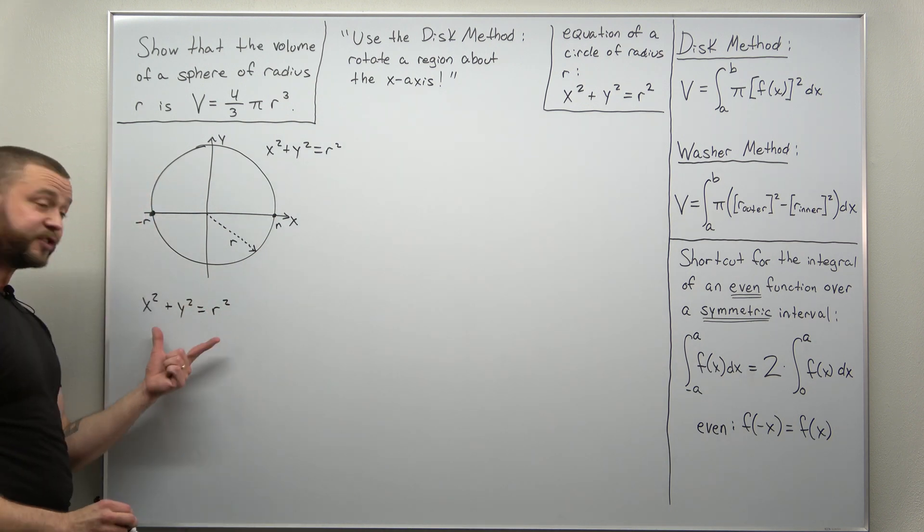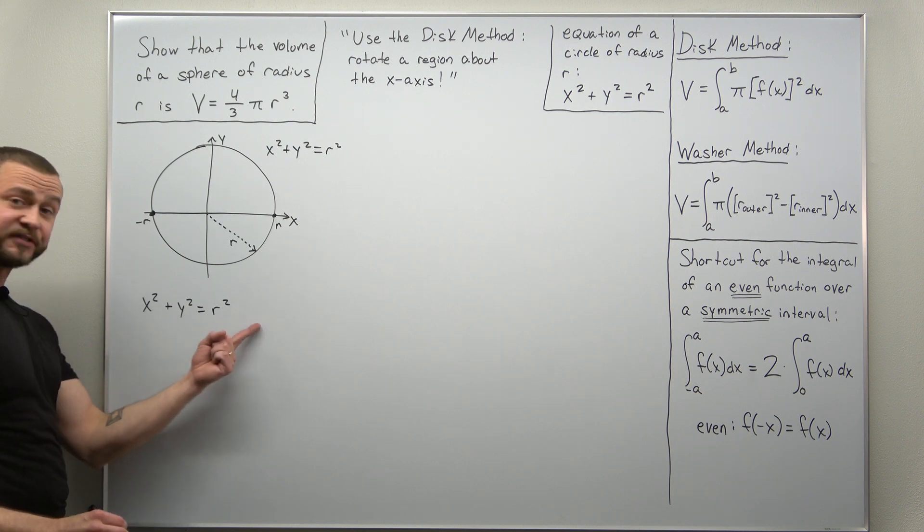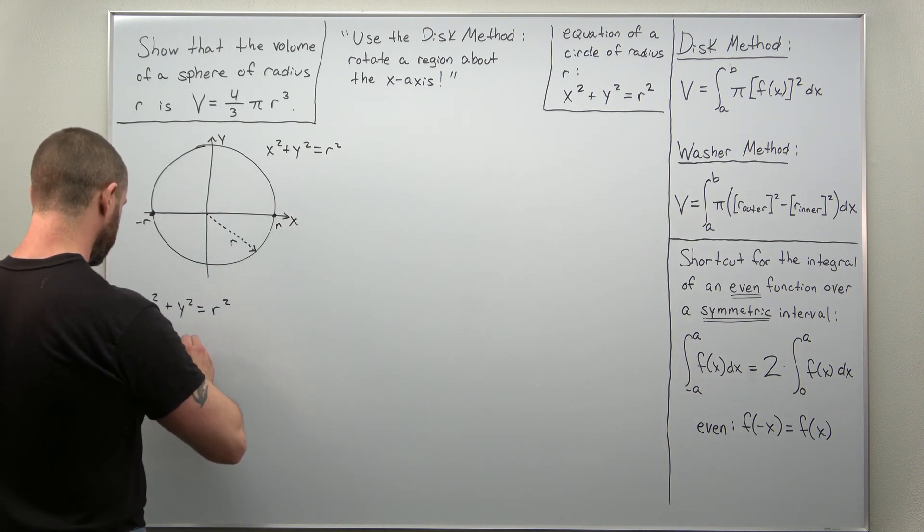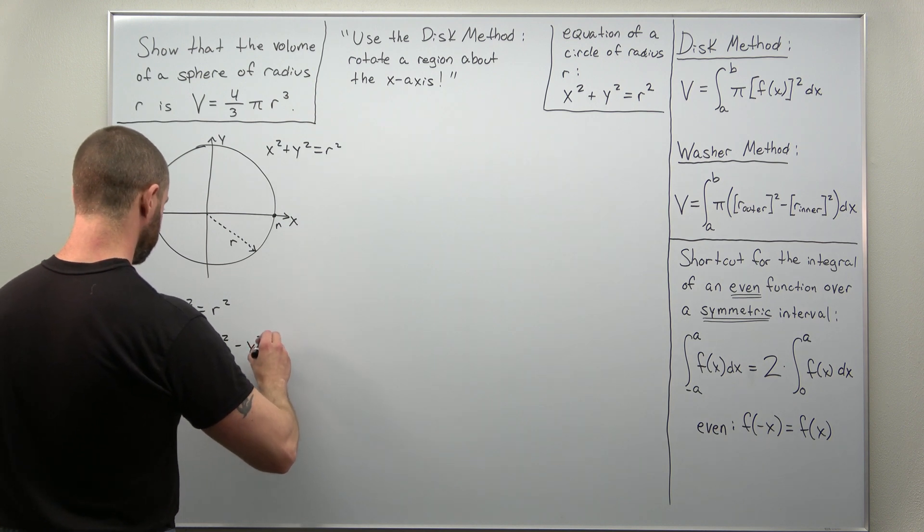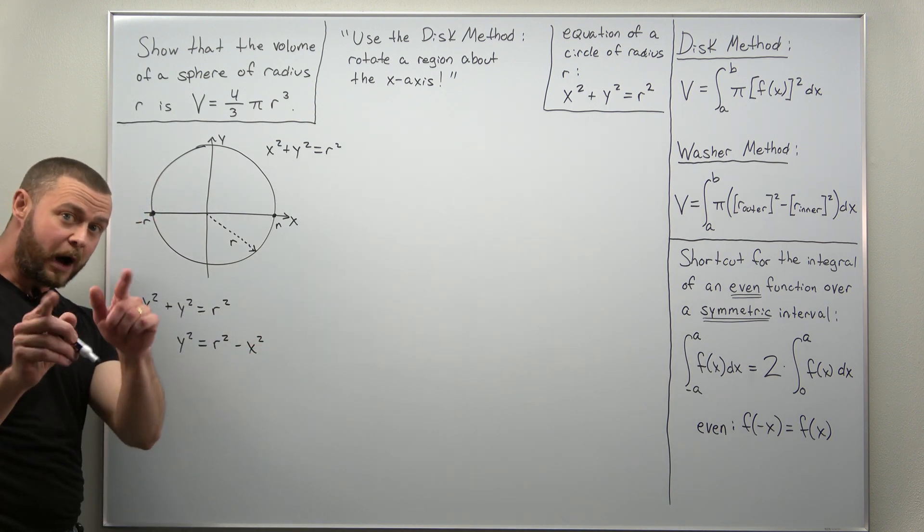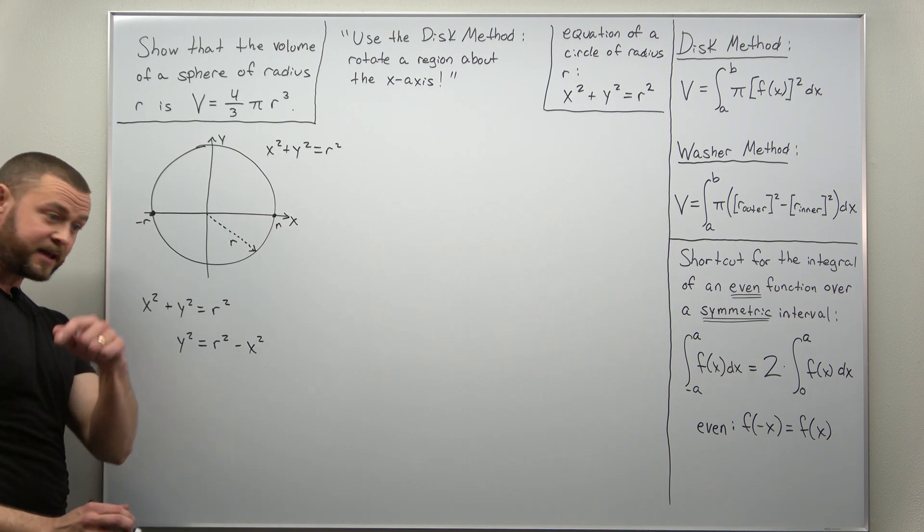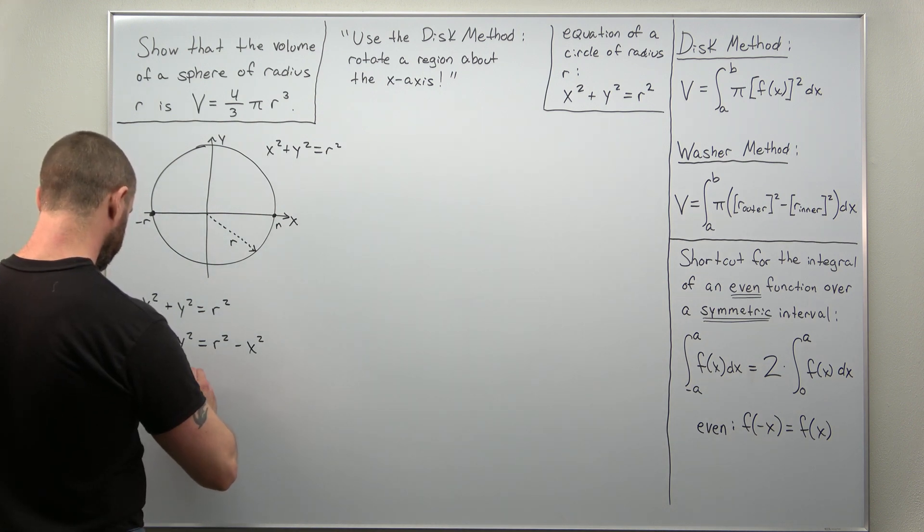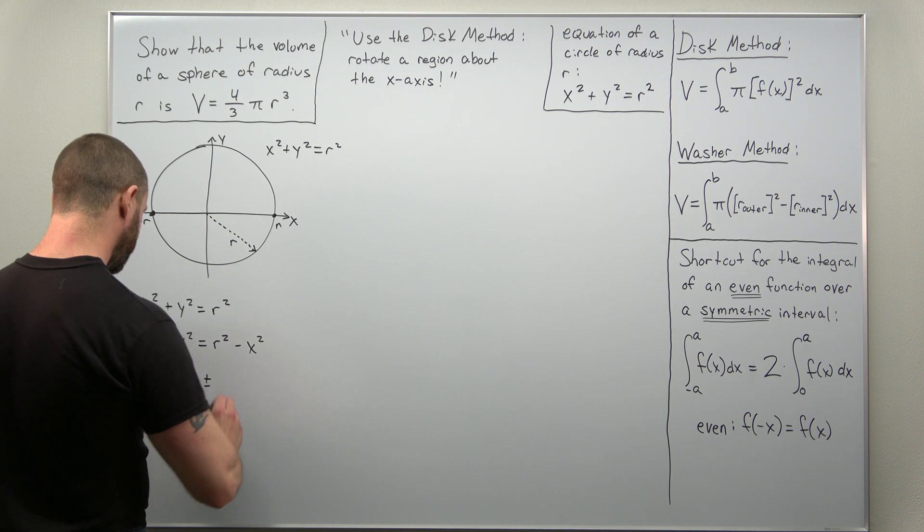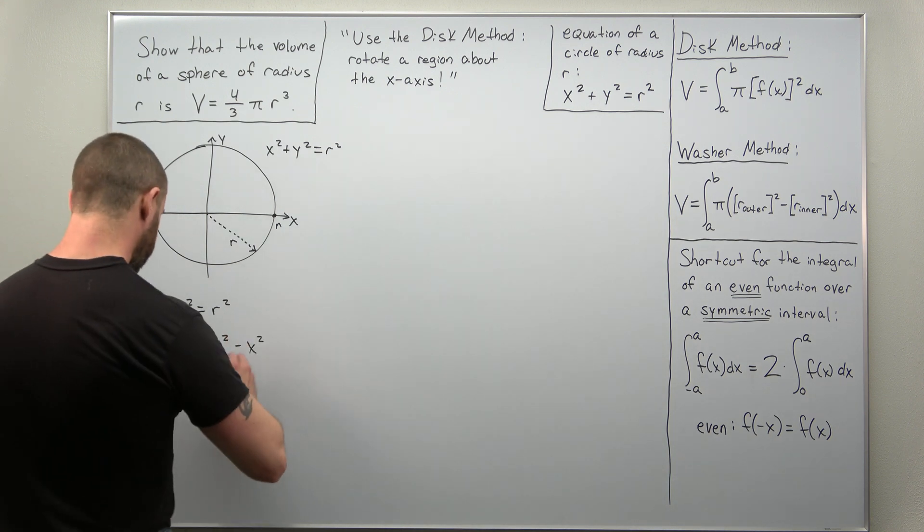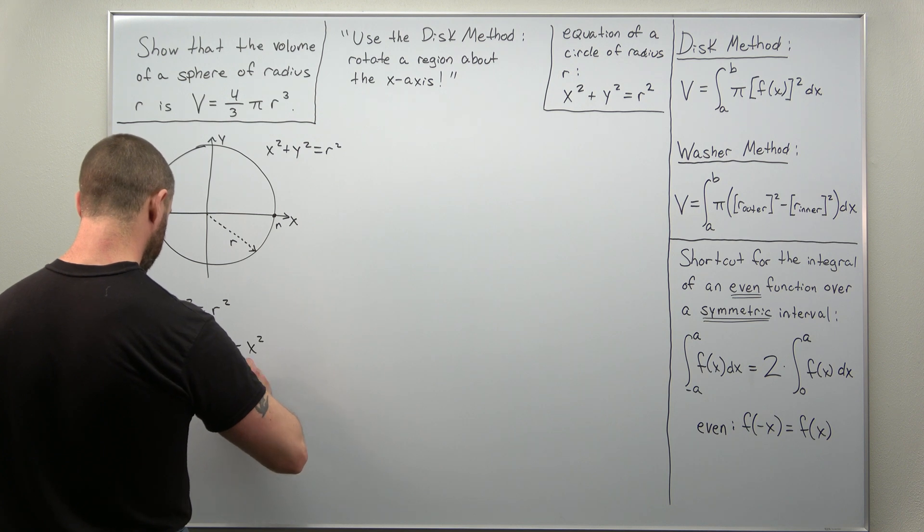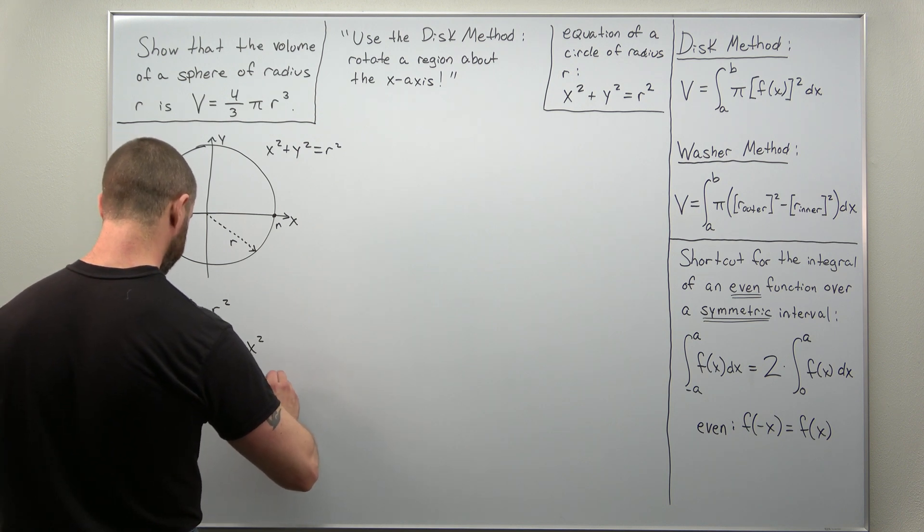All right, first I can solve for y squared, subtract x squared from both sides, and if we want to get y by itself we can cancel the square here by taking a square root. And don't forget when you take a square root you get a plus or minus, and now the square root of r squared minus x squared.